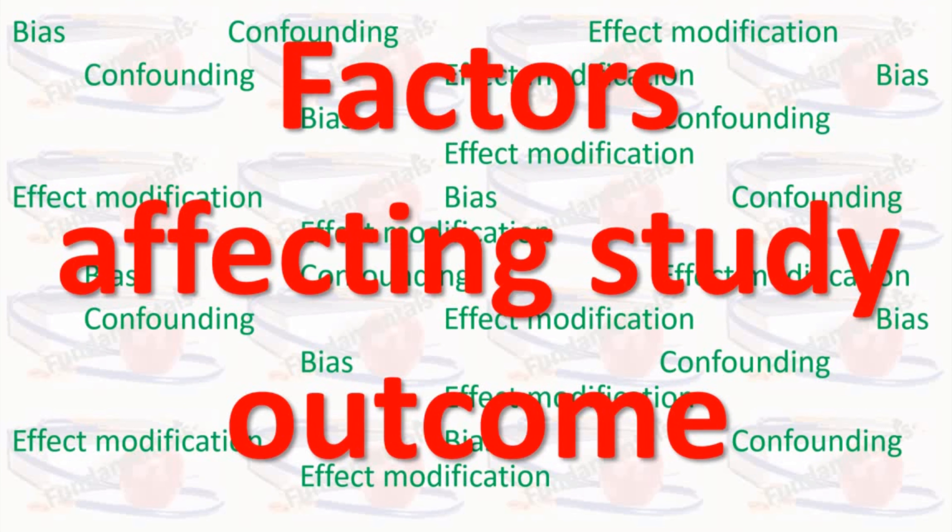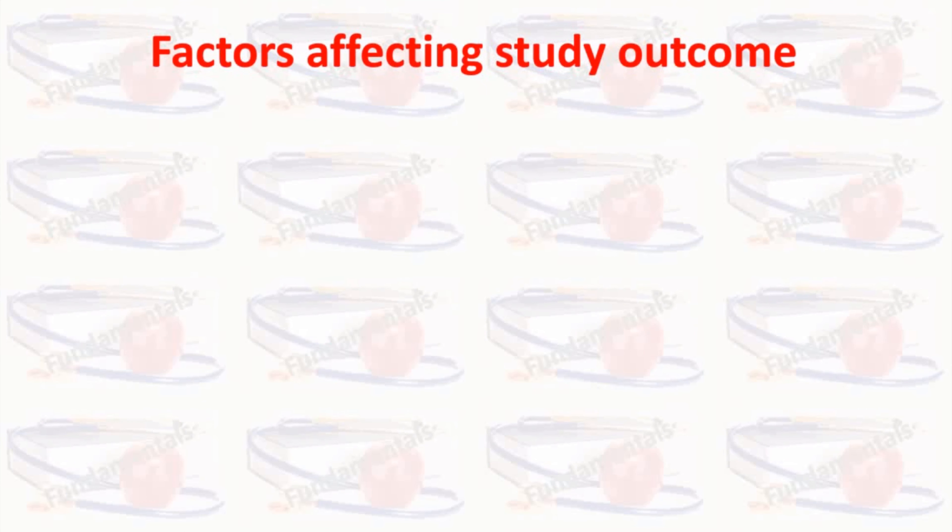I discussed the epidemiological research studies in previous sessions and now I am going to discuss the factors that can affect the study outcomes. These factors can lead the study outcomes in the wrong direction and mislead the researcher. These may be by chance, which is called random error, or bias or confounding, which may produce misleading results.